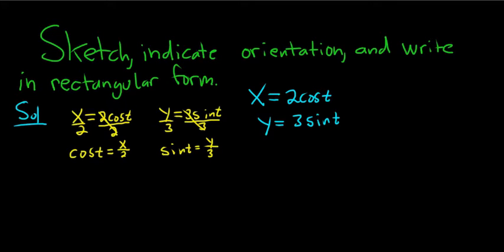Then we can use one of the most famous trig identities there is. Cosine squared t plus sine squared t is equal to 1. But cosine t is x over 2, so when you square this you're just going to get x squared over 4. Plus sine t is y over 3, so when you square that you'll get y squared over 9, and that's equal to 1.